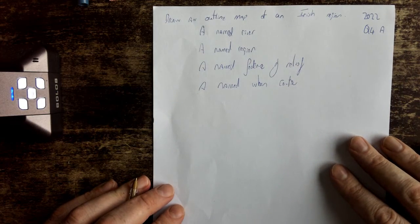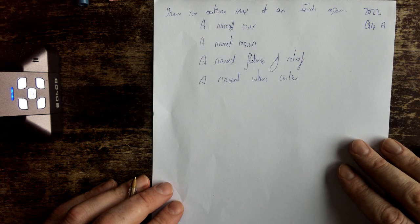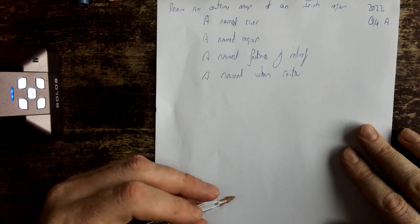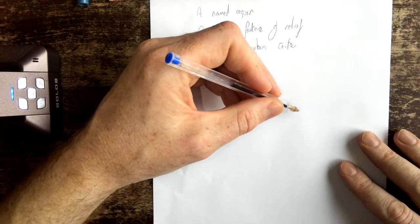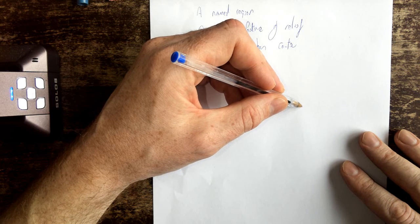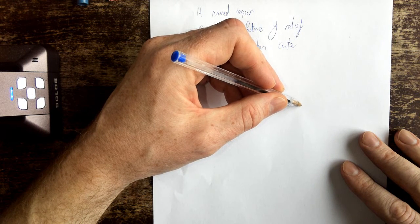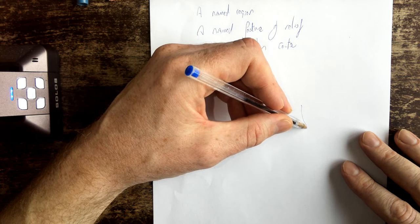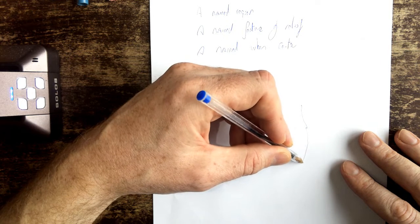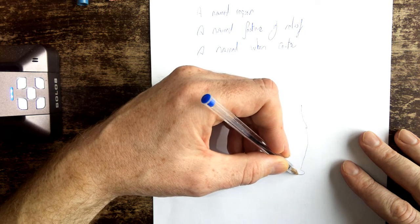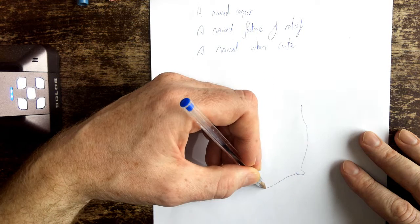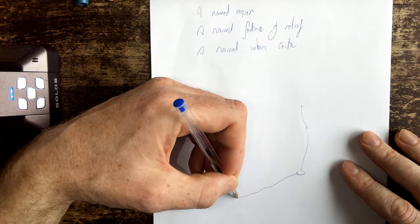Drawing the region, drawing Ireland, the outline of Ireland, is actually one of the most difficult countries to draw. But I'm going to give it a go here. So I'll start working from Ulster down along Leinster, as far as Wexford.